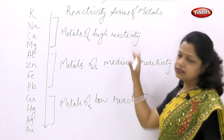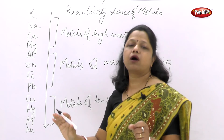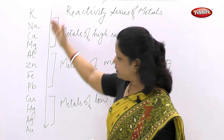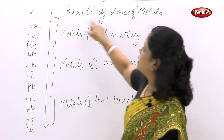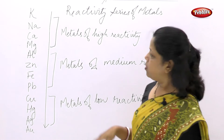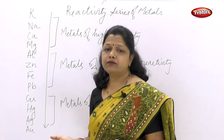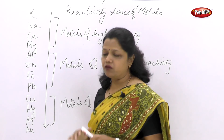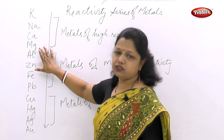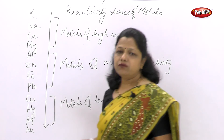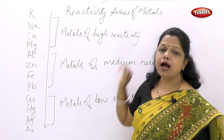To recap: we have made a reactivity series of some common metals, arranged in decreasing order. This is called the reactivity series of metals. Once we have the series, we identify which are highly reactive, which are medium reactive, and which are very low reactive. Potassium, sodium, calcium, and magnesium show quite high reactivity, and that is why we have put them in metals of high reactivity.